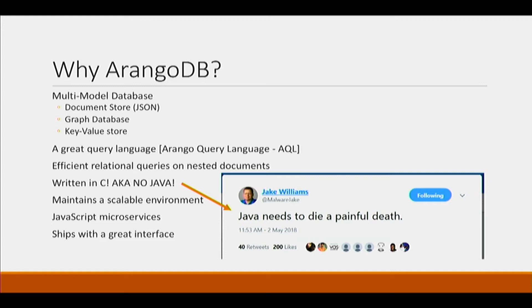We need a document store because of our data structure — it's all nested. But the problem with a lot of NoSQL solutions is that you can't relationally connect your data. Well, with Arango, we can do this. We can correlate values from our highly nested data structures. It has a great query language and great relational queries. And a great thing: it's not written in Java.